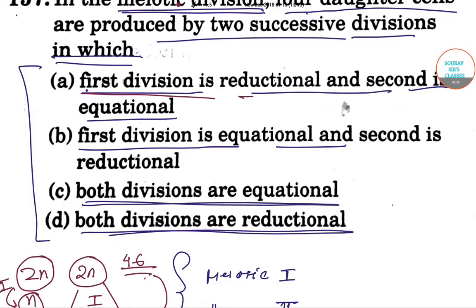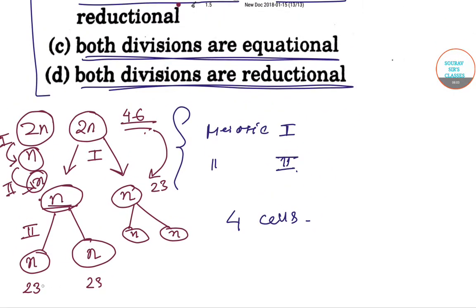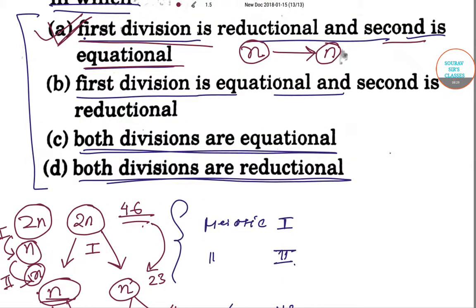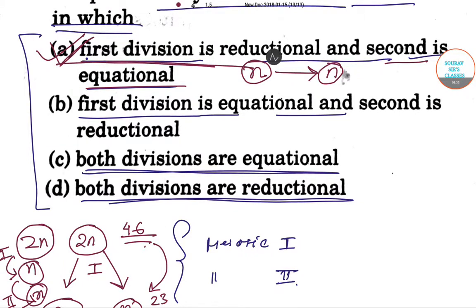So option A is correct: the first division is reduction and the second is equational, because the first meiotic division gives n number of chromosomes, and the second meiotic division again gives n — equal numbers. From one cell we produce four daughter cells in total. Option A is the correct answer. Thank you for watching this video.